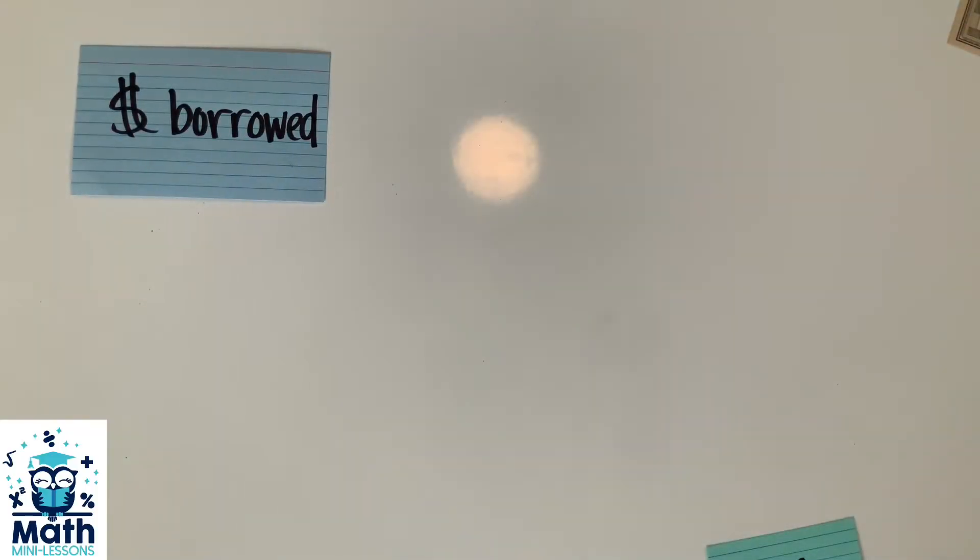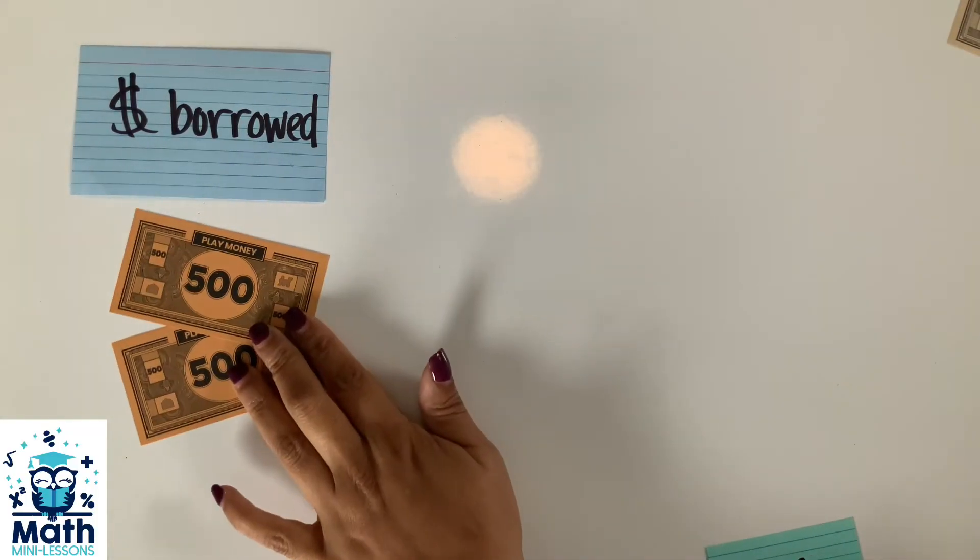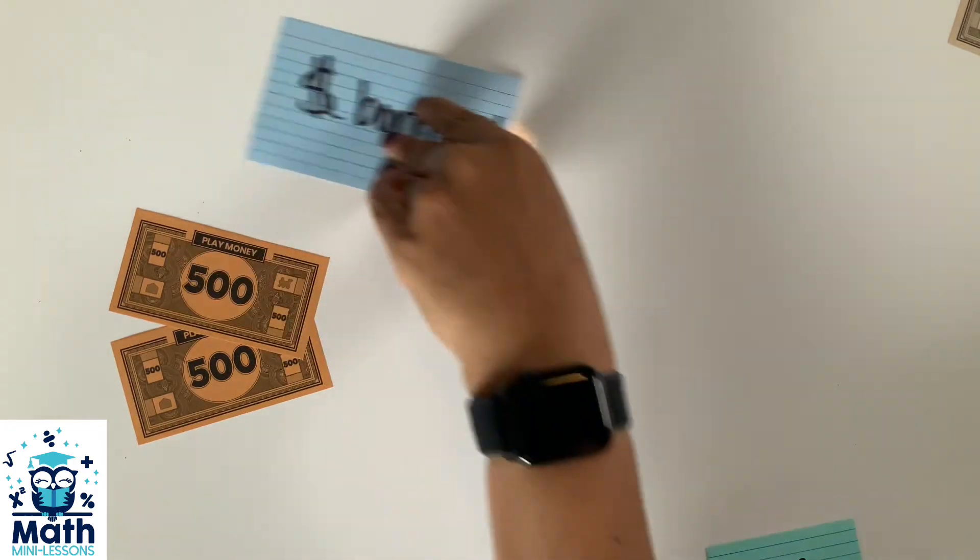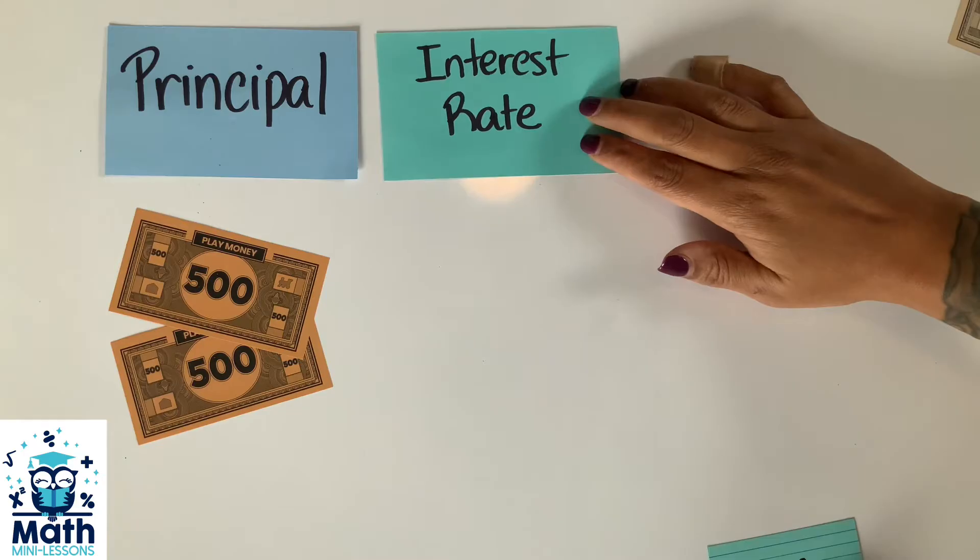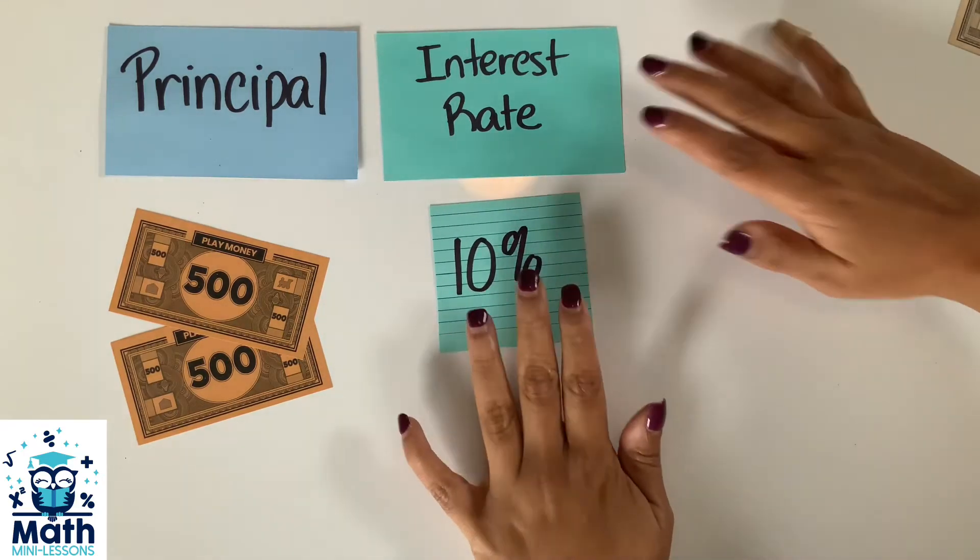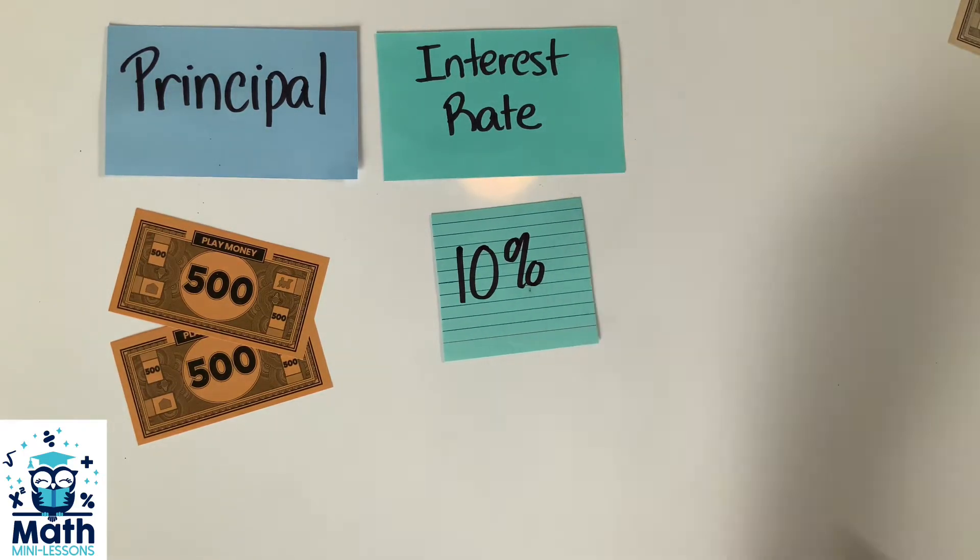Let's look at a simple interest example. Pretend you're borrowing $1,000 from a friend - we call that the principal - and your fee for borrowing the money is 10% for a given amount of time, and we'll say every single year.